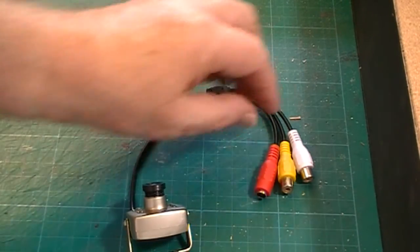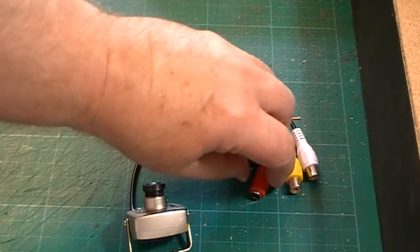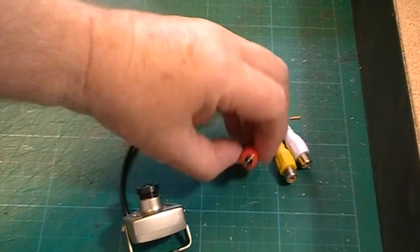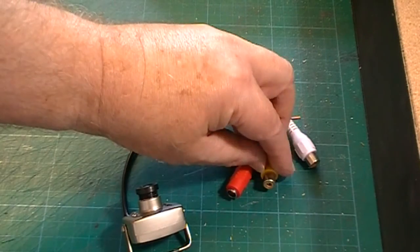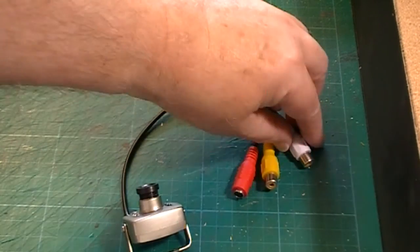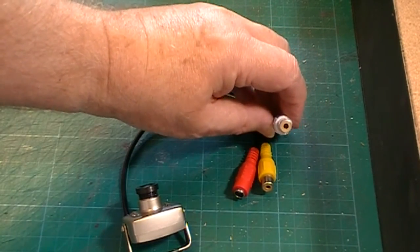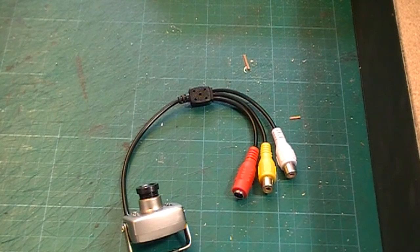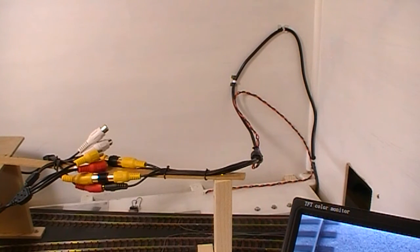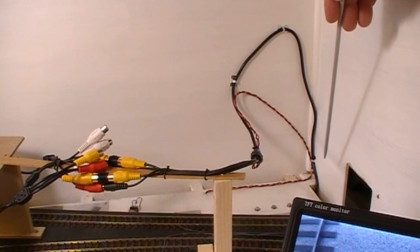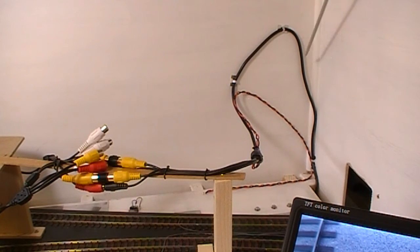The wiring on the camera: we have the red one which is for power, it's an ordinary barrel type connector. The yellow one is a phono socket for video and the white one is a phono socket for audio. I don't use the audio.